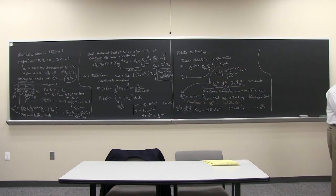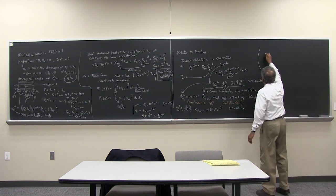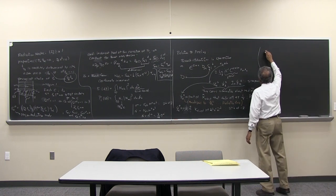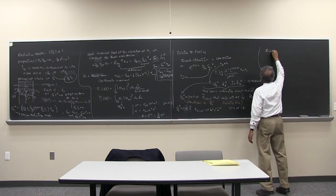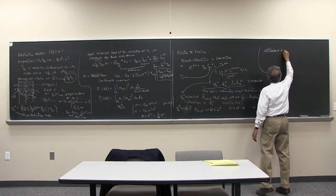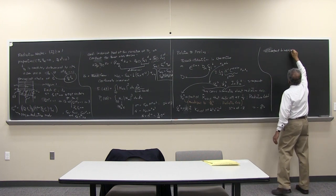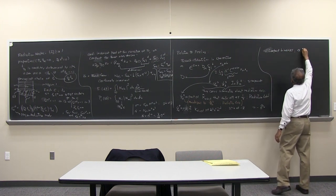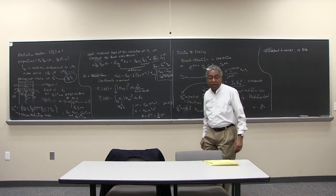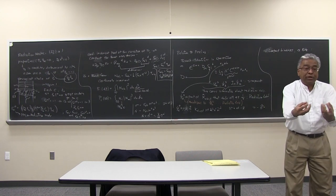This is really important because of what people do in numerical relativity. For compact binaries — binary black holes or binary neutron stars going around each other — you can calculate the quadrupole moment of the system. Because they are going around each other, the quadrupole moment is changing in time.